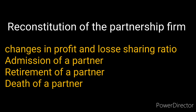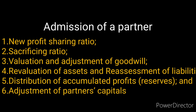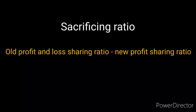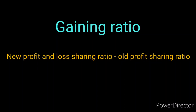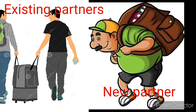Because of admitting a new partner, the profit and loss sharing ratio is going to change. The new partner will bring capital and goodwill money into the business — that may be cash or other assets. The existing partners will be compensated in terms of the goodwill brought in, based on the sacrificing ratio. The sacrificing partners will be compensated for what they gave up.